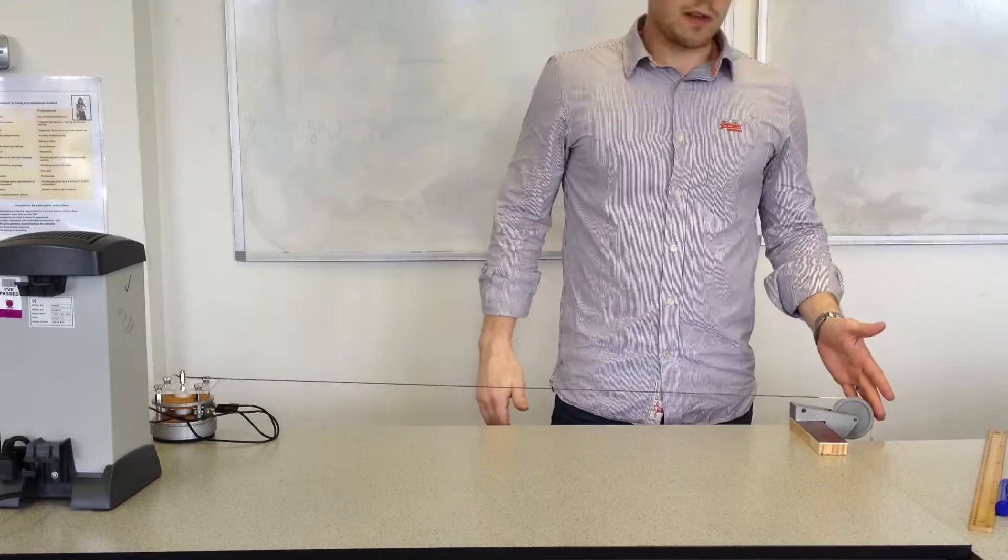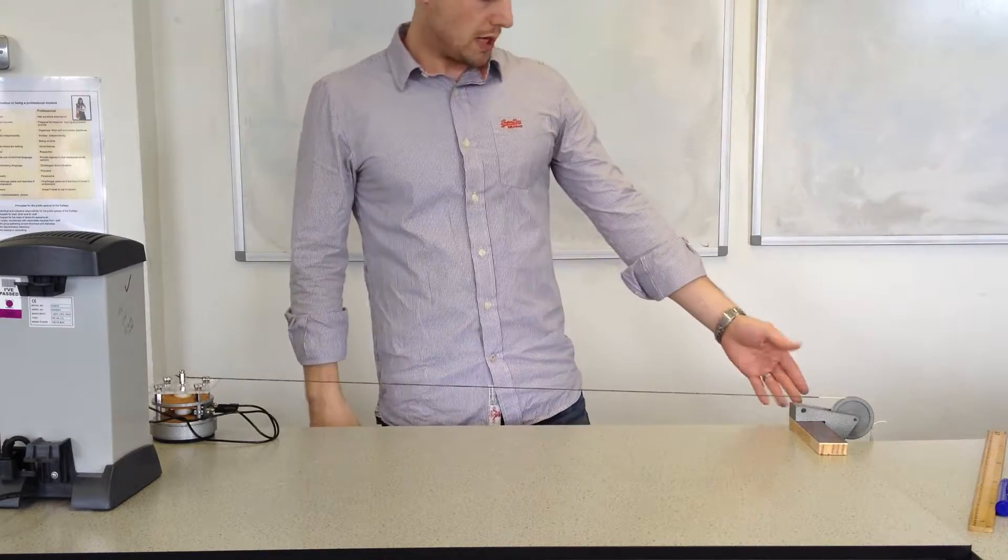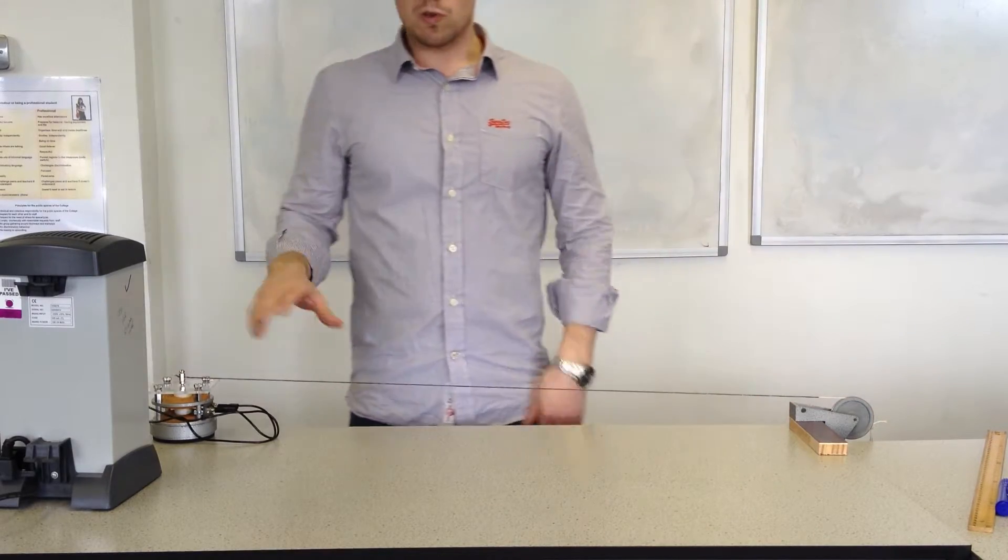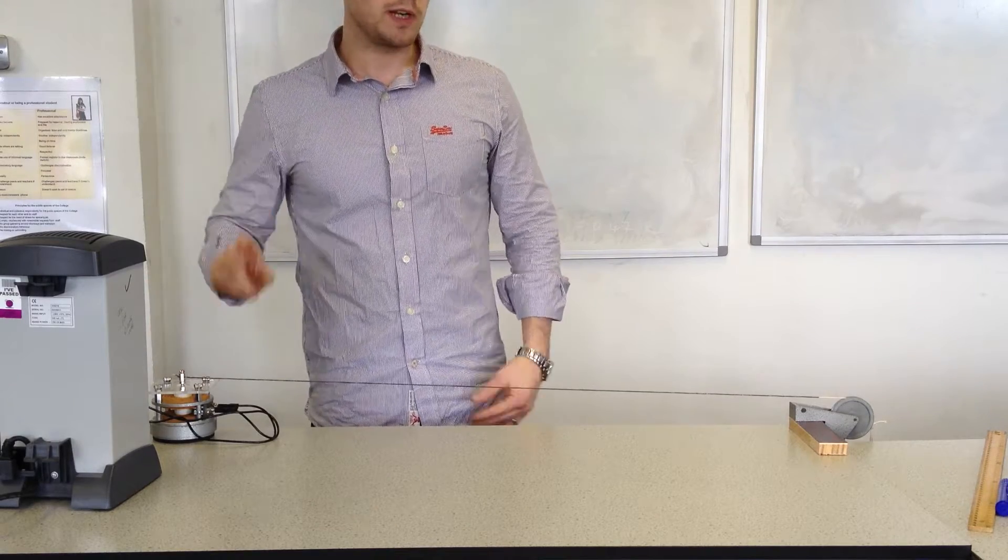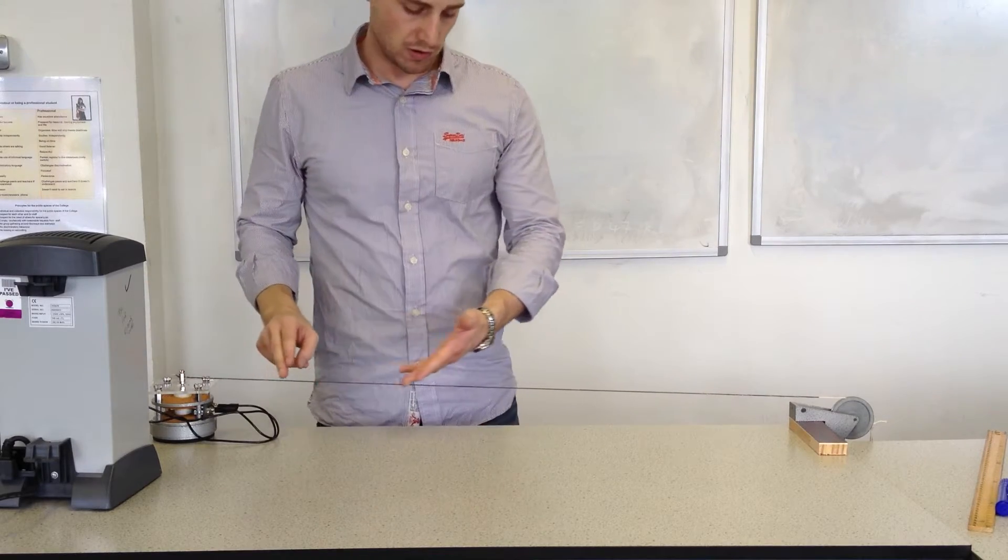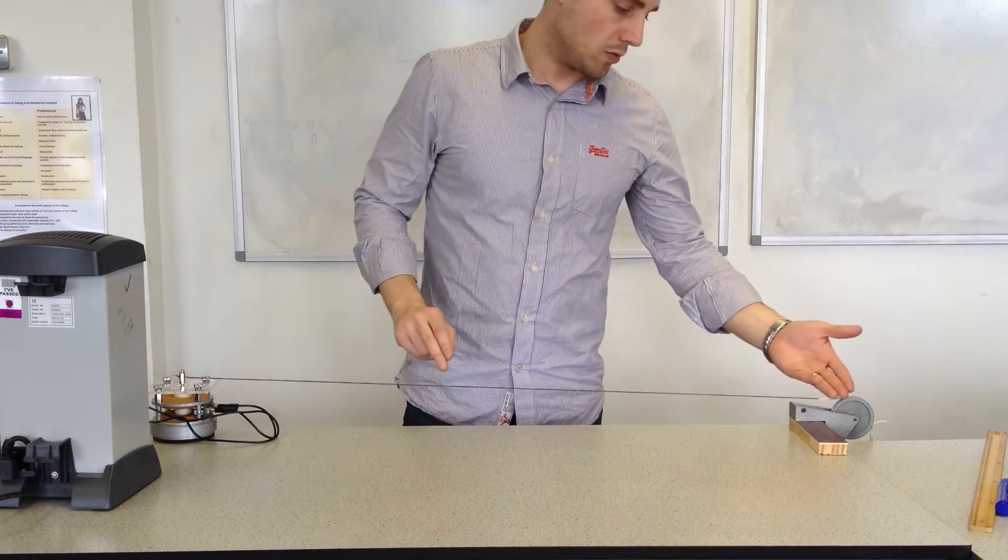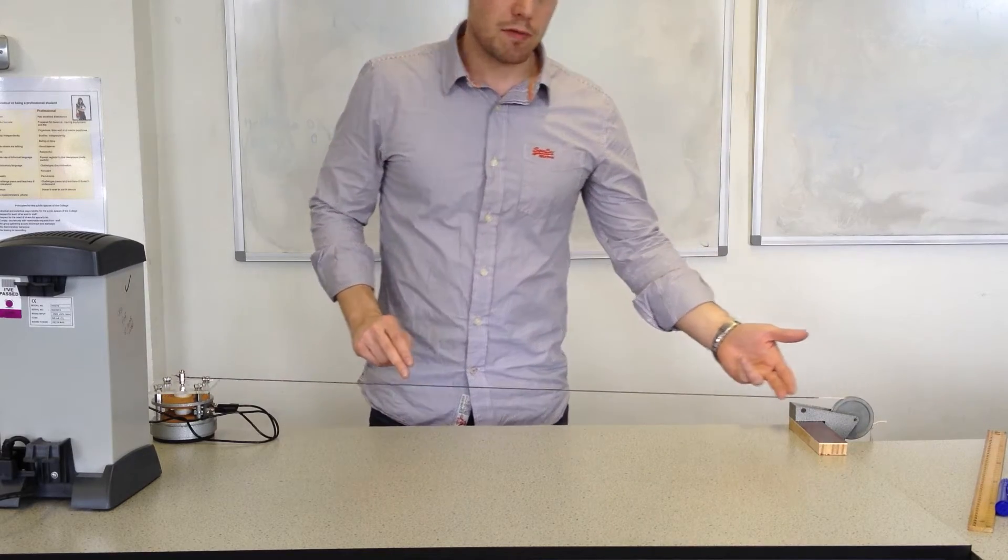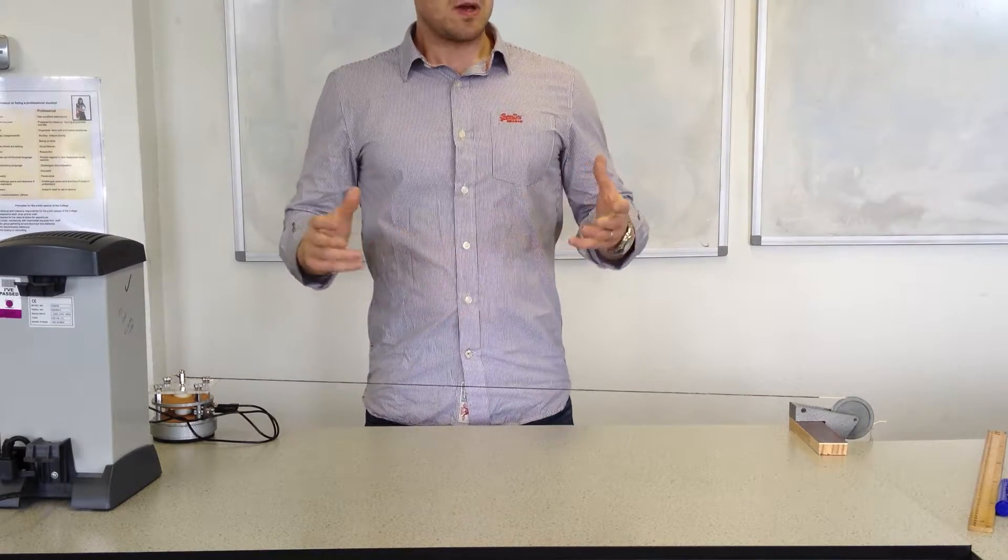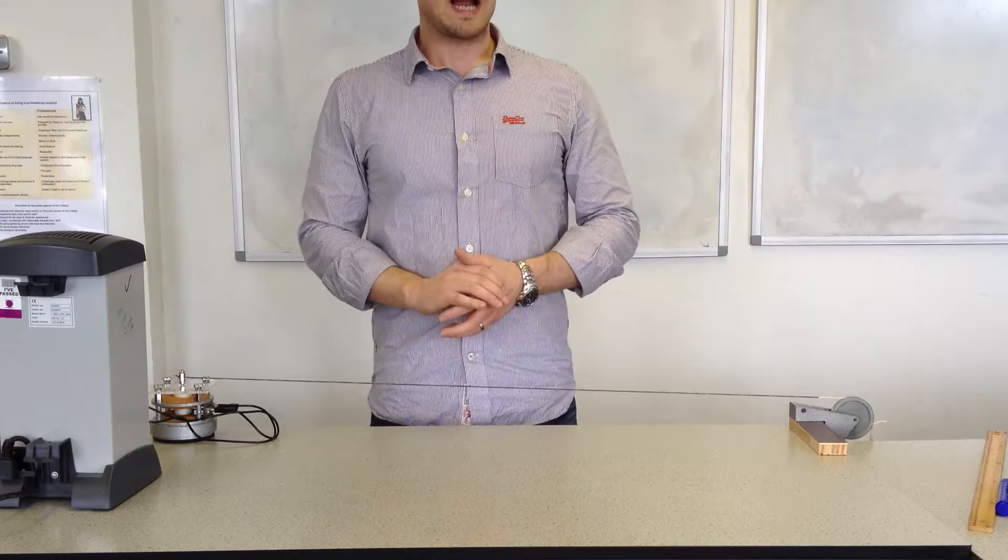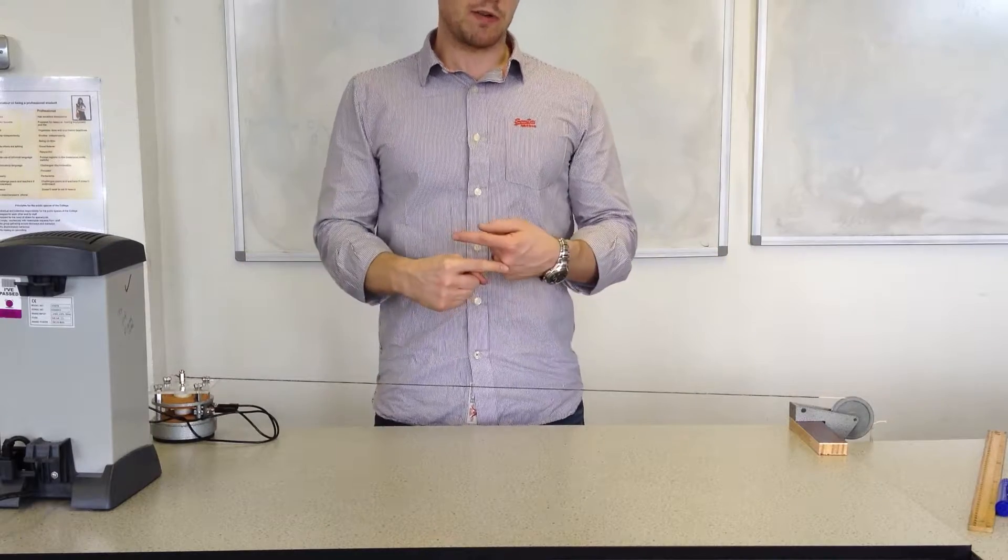And at this end, the string is kept taut by being over a pulley with a mass there. What's going to happen here is that the vibration generator going up and down will produce a wave which will travel along the string. It will travel up to the pulley and get reflected. That will give me two waves of the same type with the same frequency and amplitude travelling in opposite directions.